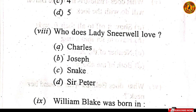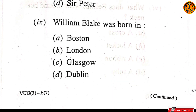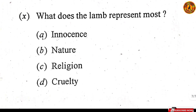Question number eight: Who does Lady Sneerwell love? Option A — Charles. Question number nine: William Blake was born in London. Aap agar William Blake ke baare mein padhe honge, poetry mein dekha hoga, to us mein answer tha — option B, London. Question number ten: What does the lamb represent most? Option A — innocence.